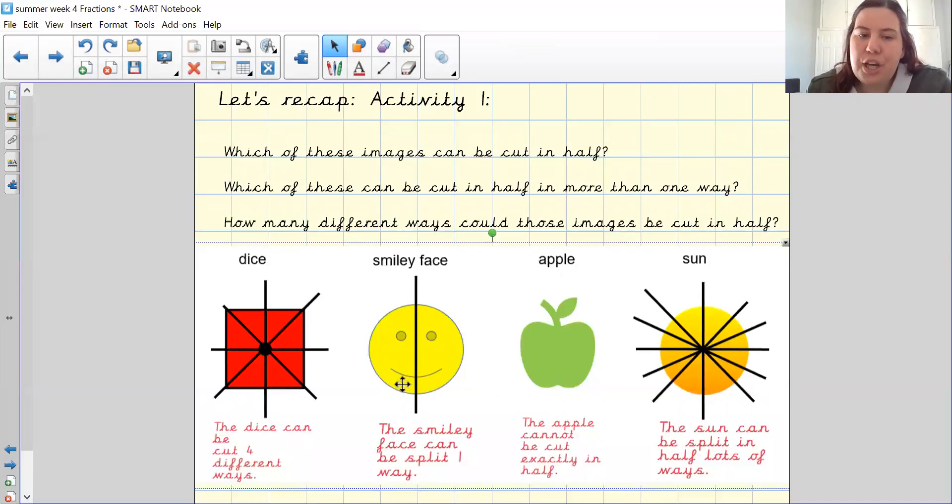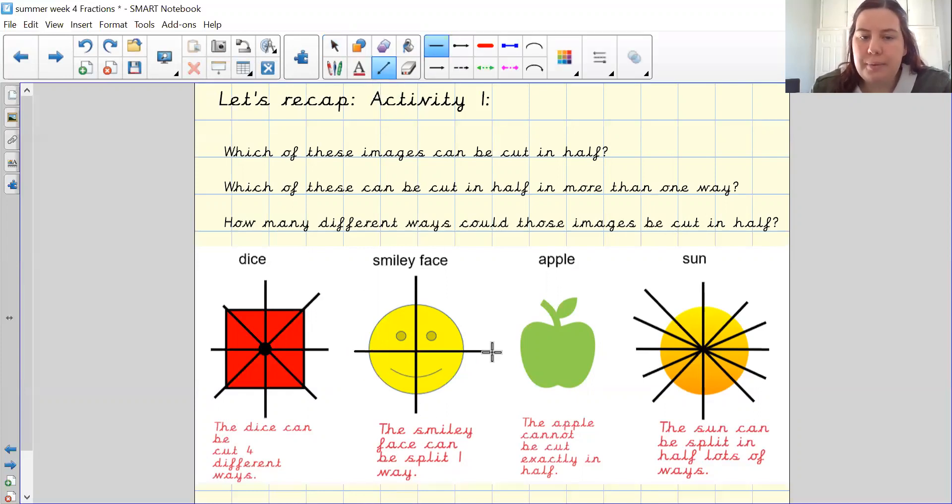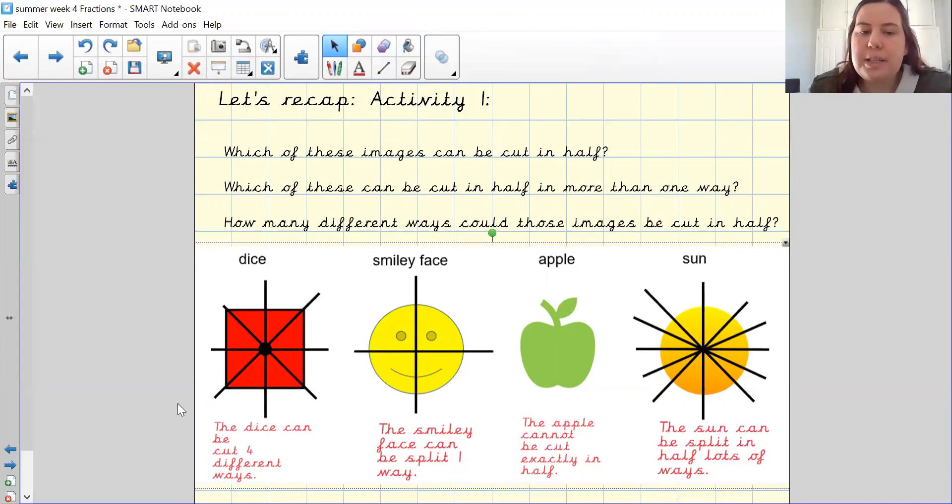The smiley face could only go one way for it to be half, and it had to be right down the middle because if we were to do it going this way, then there are two extra dots. Which means for the eyes, that is not the same at the bottom, so that is impossible.